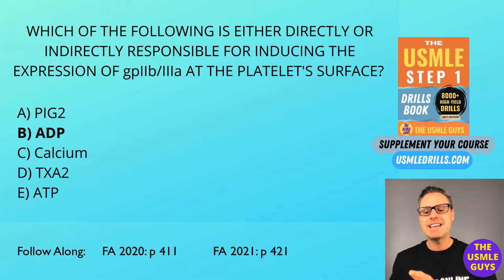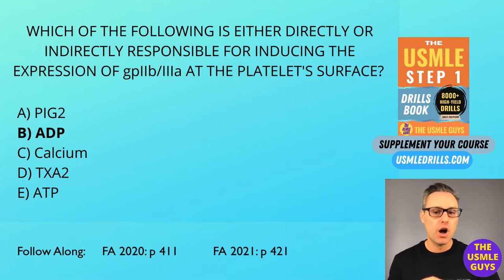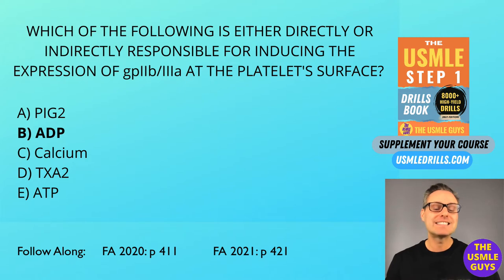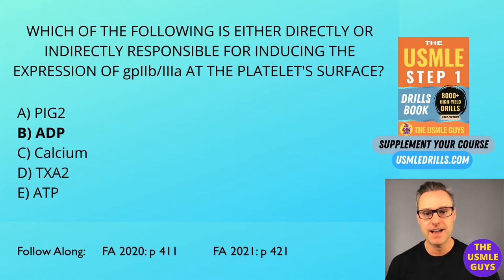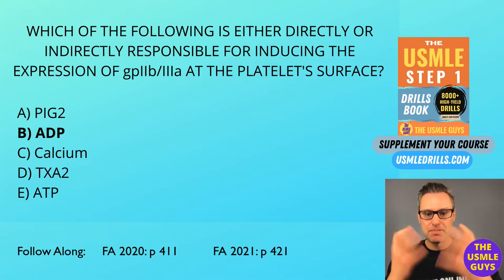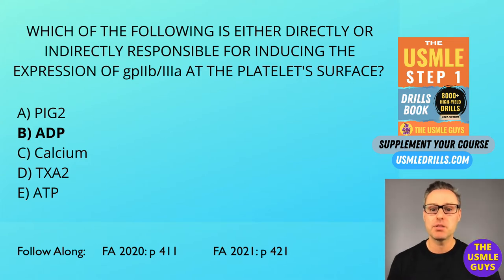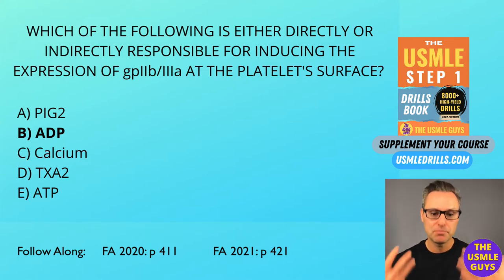First, aspirin. It can irreversibly inhibit the cyclooxygenase enzyme that's needed for the synthesis of thromboxane A2, which will affect the ability to form the platelet plug, which is why aspirin can induce bleeding.